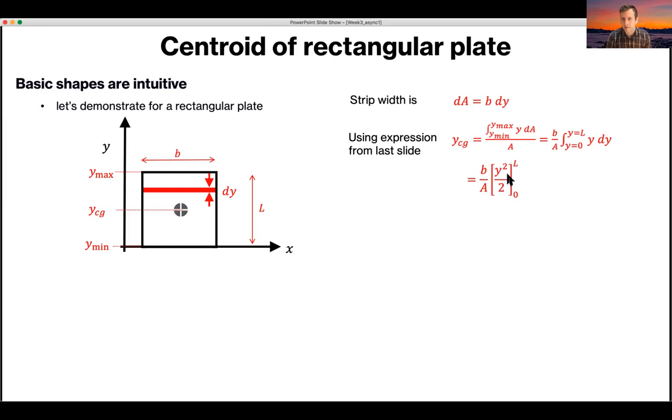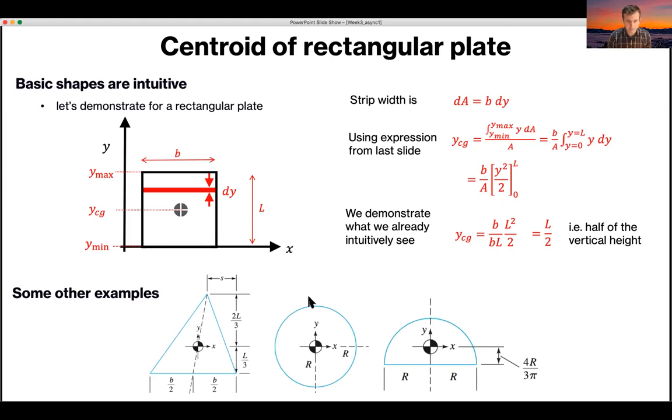And what you can then do, you have the integral is y squared over 2 between L and 0. So you have L squared over 2 minus 0, so L squared over 2 times B times BL, which is the area of the plate. The Bs cancel, one of the Ls cancel, and you're left with L over 2. So intuitively you knew that for this rectangular plate, the center of its area is going to be halfway from its lower axis to the top, L over 2. But this has demonstrated that you can apply the general principle, the general formula, to find that distance. And you can do this for any shape.